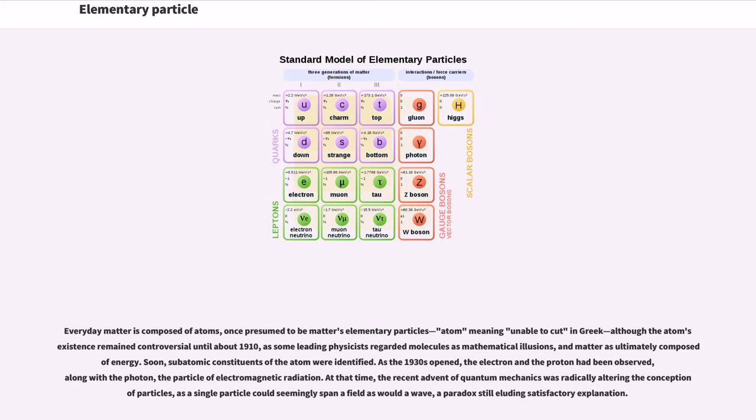Everyday matter is composed of atoms, once presumed to be matter's elementary particles—'atom' meaning 'unable to cut' in Greek—although the atom's existence remained controversial until about 1910, as some leading physicists regarded molecules as mathematical illusions, and matter is ultimately composed of energy. Soon, subatomic constituents of the atom were identified.